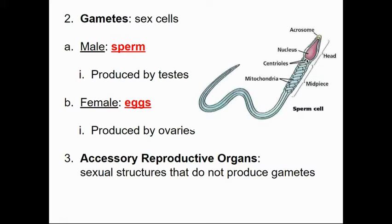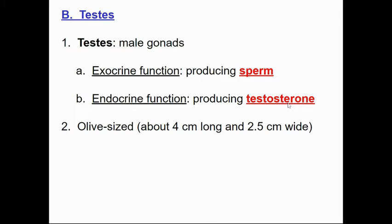Gametes are the sex cells — sperm for male, egg for female. The testes have endocrine and exocrine functions. Endocrine would be production of testosterone, which we already know. Exocrine means it's going to go into a set of tubing — in this case, that would be the sperm going into the vas deferens and then into the urethra to leave the body.